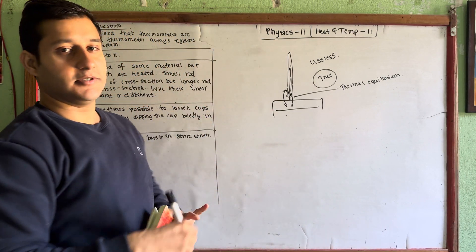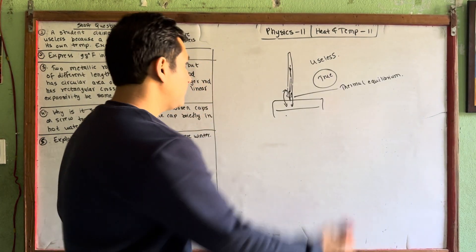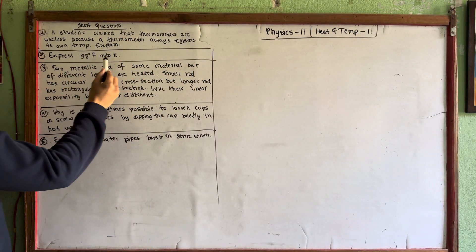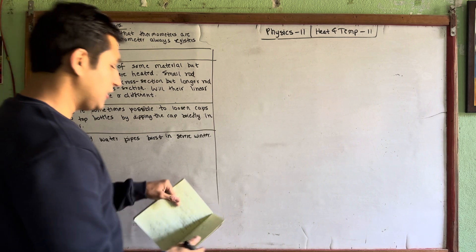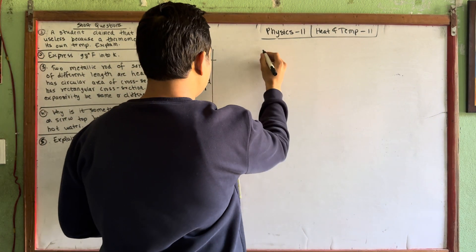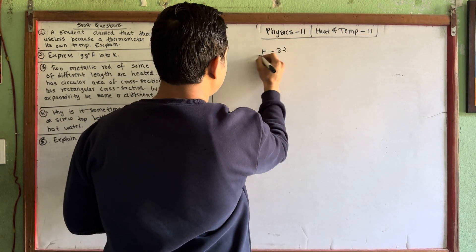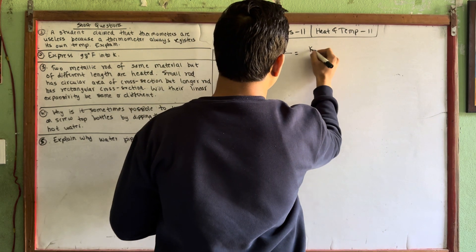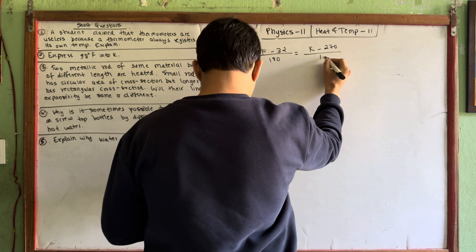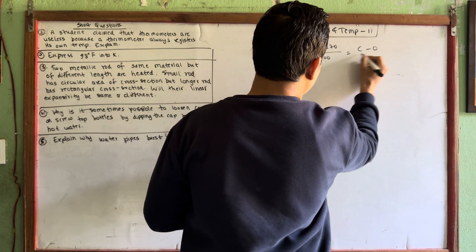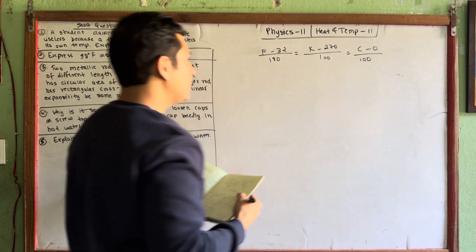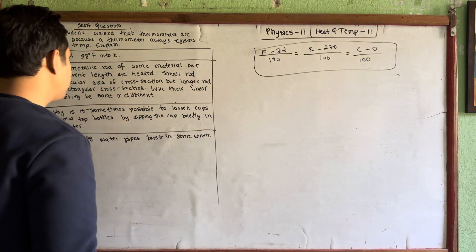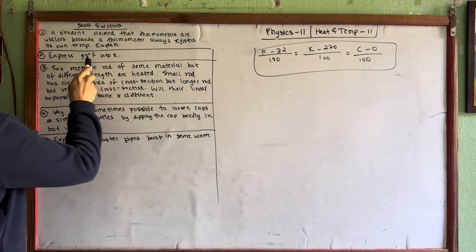Let's move on to number two. Number two: the formula is K minus 273 divided by 100, equals C minus 0 divided by 100. So what we have to do is remember the formula and I will tell you what we have to do.